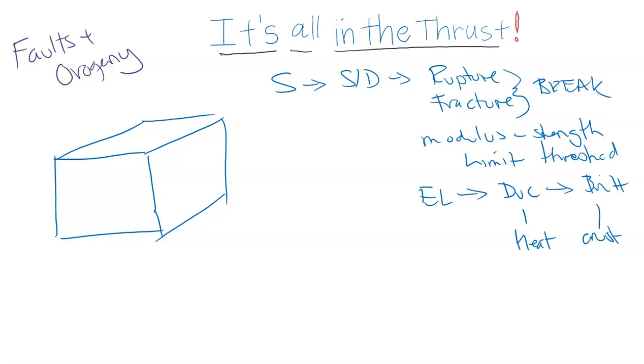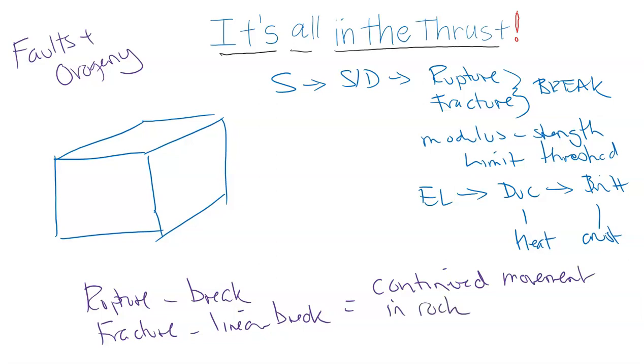The rupture or fracture—a rupture is where you get the break, and a fracture can be a linear break, continuous or a set of different breaks. If you have continued movement in that rock around the fracture, we now call it a fault line. It's continued movement because of the stress and the convection currents.